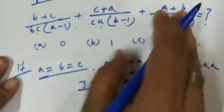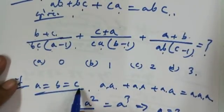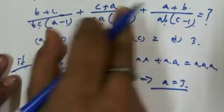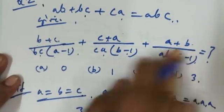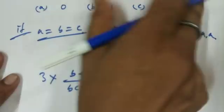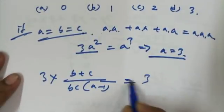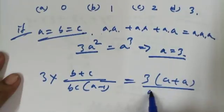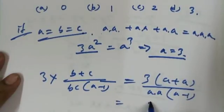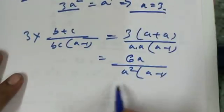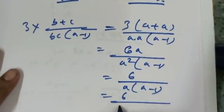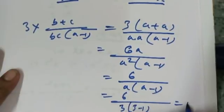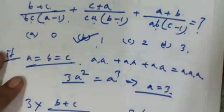Now putting A = 3: the three parts are identical, so we compute 3 × (B+C)/(BC) × (A−1) = 3 × (2A)/(A²) × (A−1) = 3 × (6A) / (A²(A−1)) = 6/(A(A−1)) = 6/(3×2) = 1. So option B (value = 1) is the correct option.